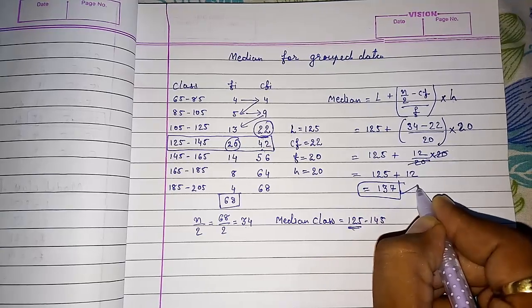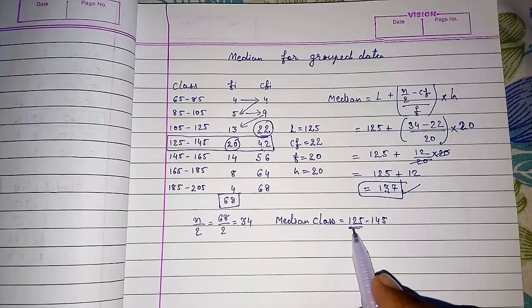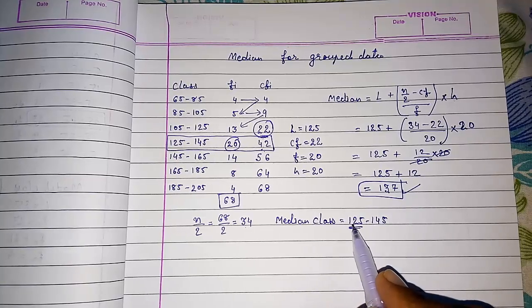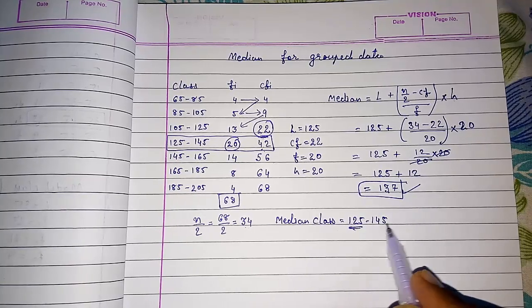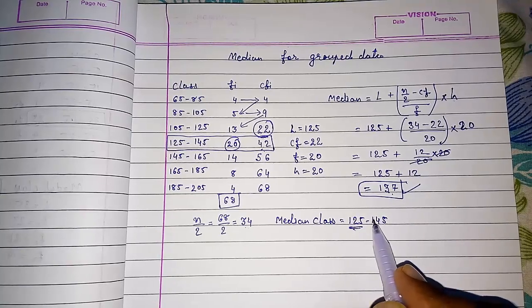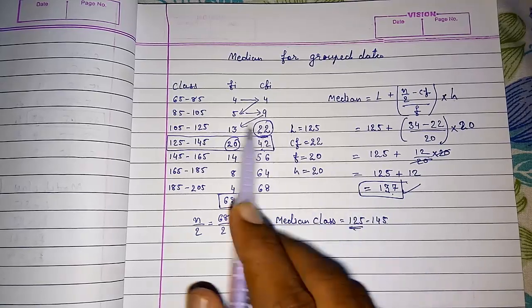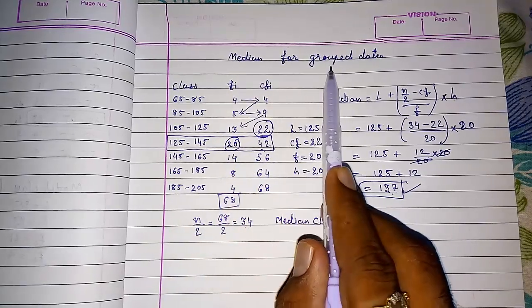This is our median. Always remember, median is always between our median class frequency. Our class is 125 to 145, so you will get median between these two numbers only. This way we can find median for any grouped data.